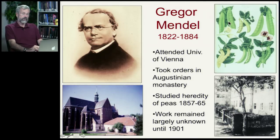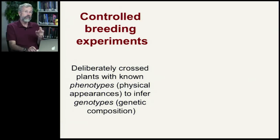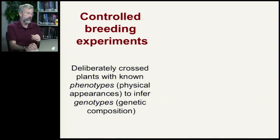Mendel was interested in variants in different characteristics — whether peas are round or flat, the pods green or yellow — and was very careful in tracking how traits passed from one generation to the next. His work consisted of a series of controlled breeding experiments, and his extraordinary insights came from deliberately crossing plants with known phenotypes — physical appearance — to infer genotypes, their genetic composition, working backwards from physical characteristics.